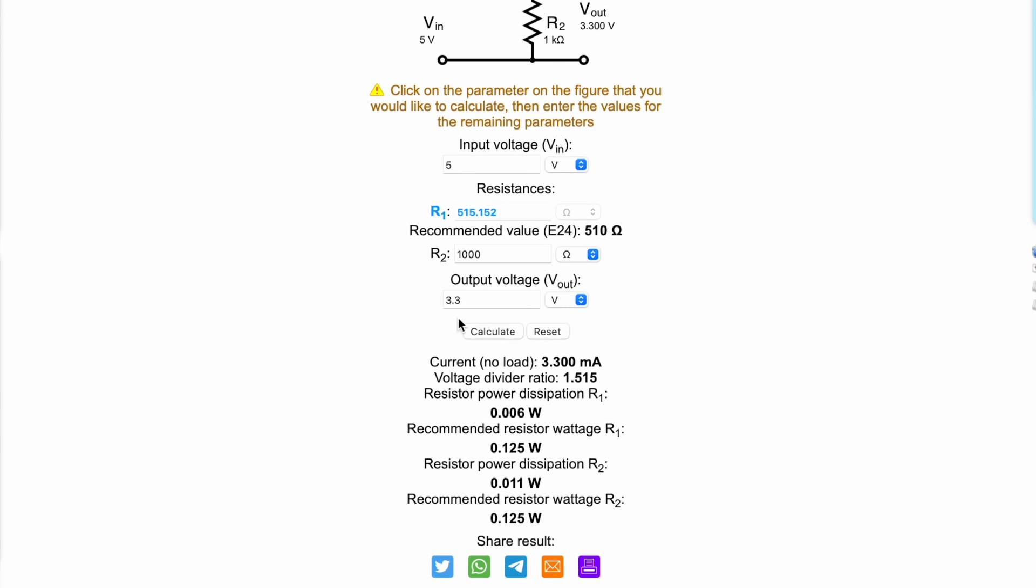The obtained result contains the calculated and recommended normalized resistor ratings according to the E24 series, the division coefficient, the current in the divider circuit, and the values of the power dissipated on the divider resistors.